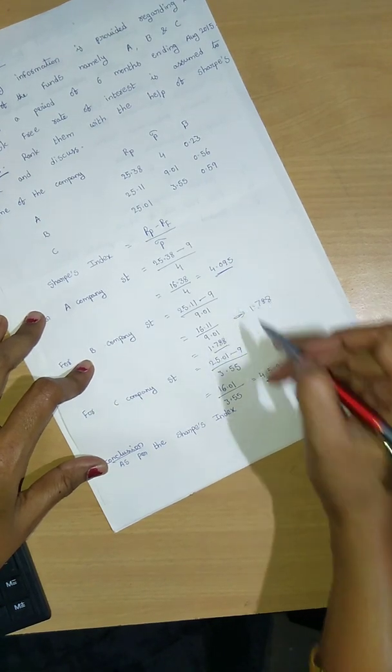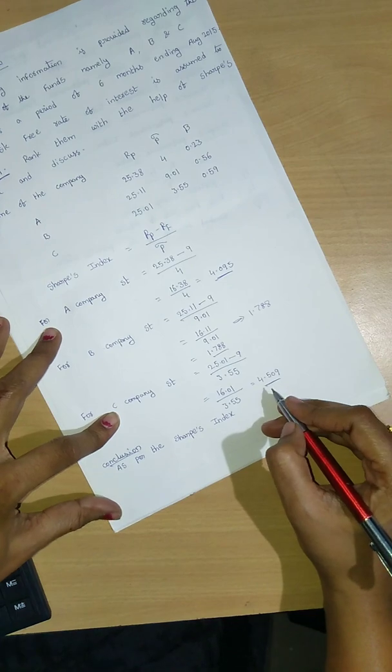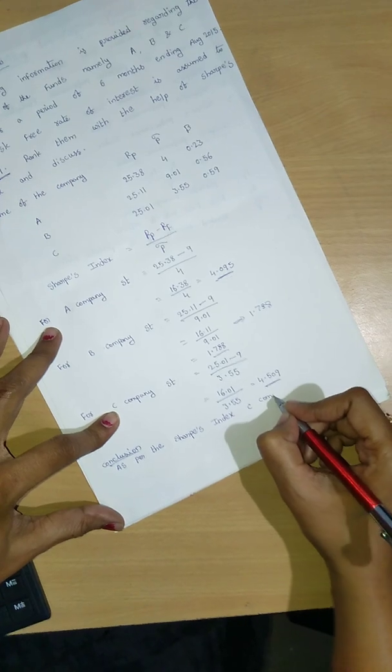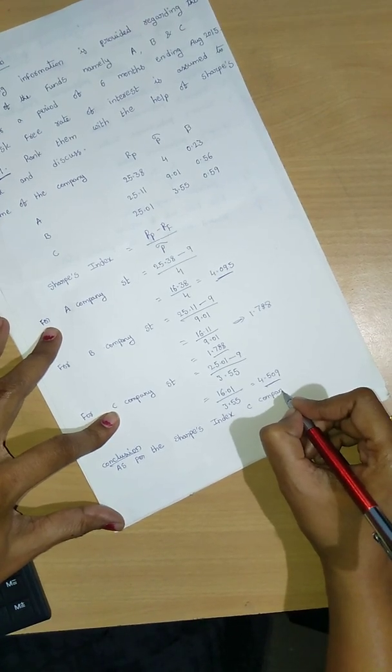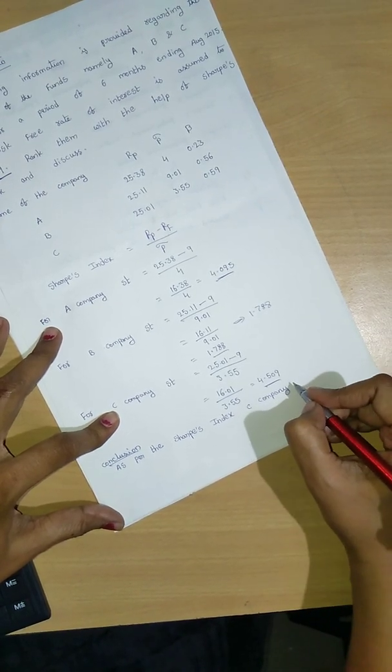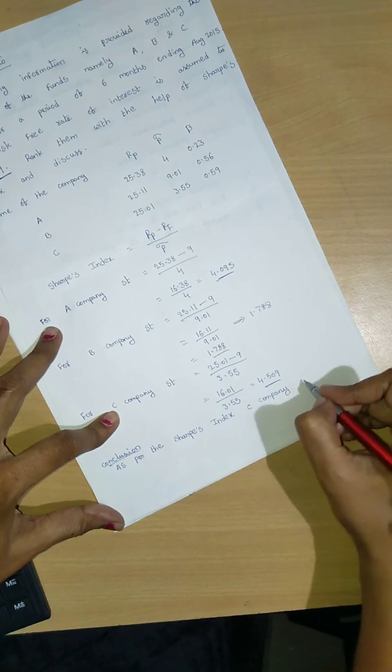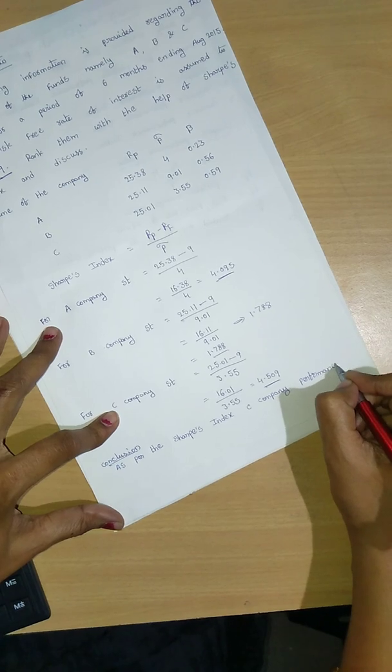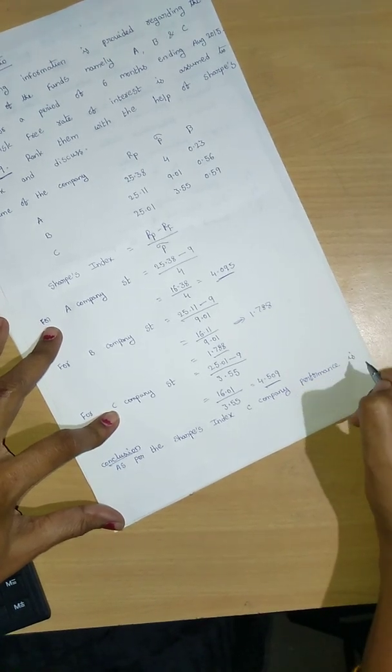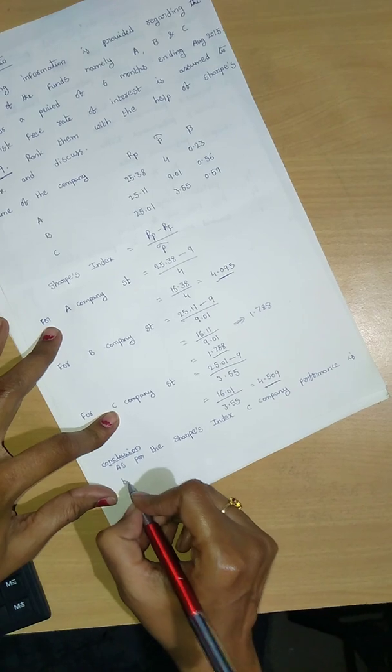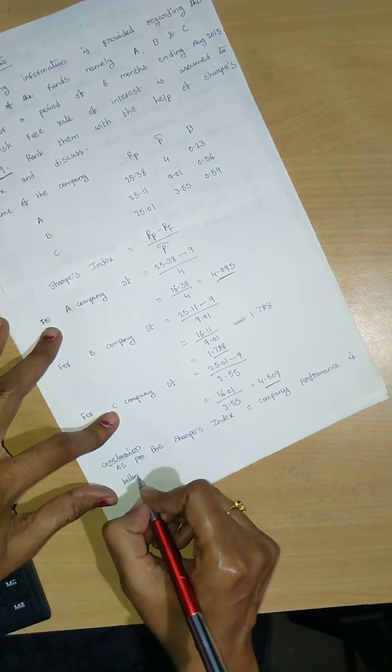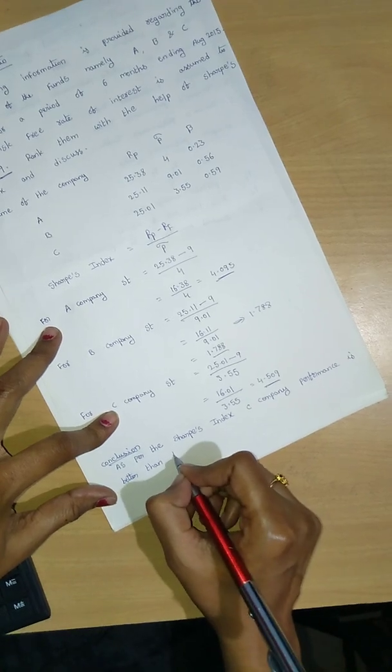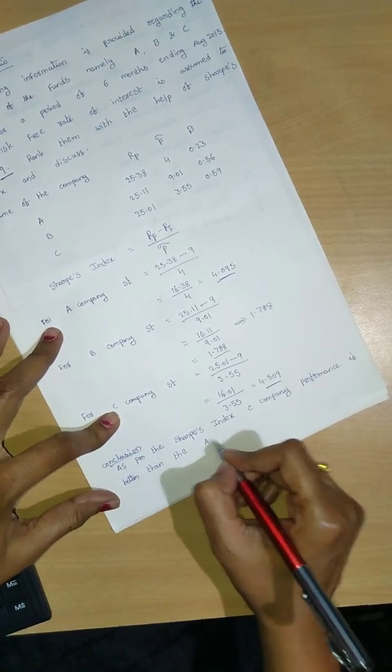So which fund has better performance? C company. C company's performance is better than A and B companies.